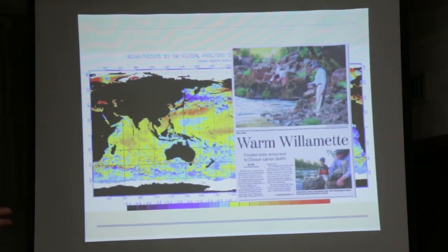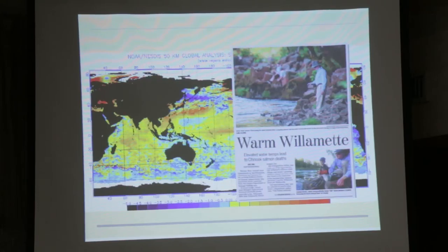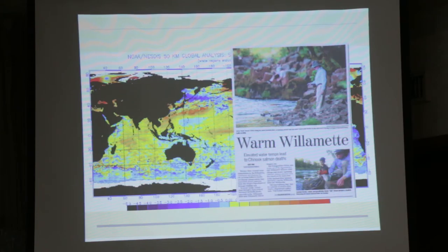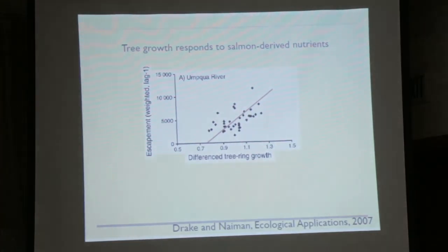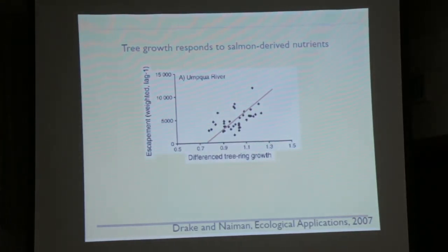We know there is a climate-salmon link — warm stream temperatures are harmful for salmon, as was the headline yesterday in the Albany Tribune. Stream flow is also important for salmon, and we know these things have changed over thousands of years. So it's reasonable to ask how much salmon populations have changed over thousands of years in response to those climate changes. One way to do it is to look at the effect of nutrients which salmon bring to the riparian ecosystems — the marine-derived nutrients.